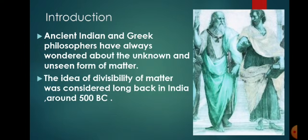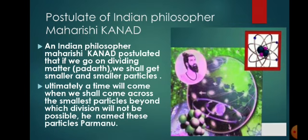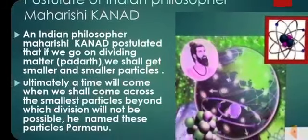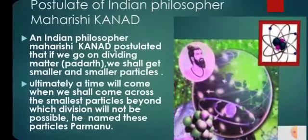The idea of divisibility of matter is that if we go on dividing matter, we shall get smaller and smaller particles. We shall come across the smallest particles beyond which division will not be possible. He named these particles Parmanu.